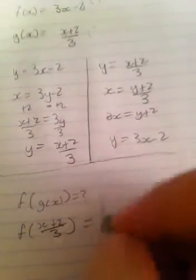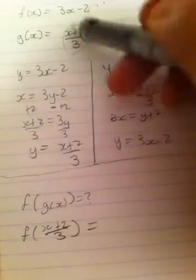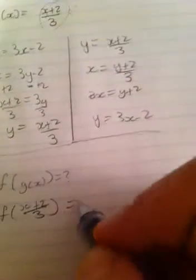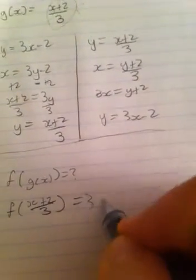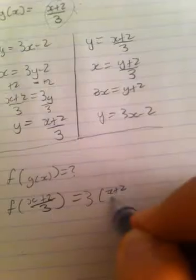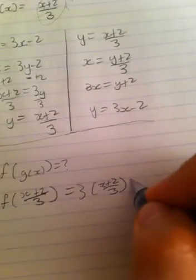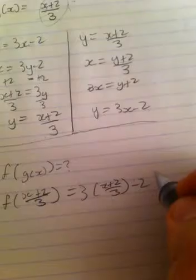And now this is going to equal, we're going to plug this in wherever we see x, so that we have 3 times x plus 2 over 3 minus 2.